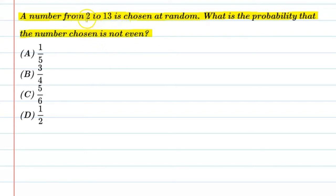What does this question mean? It means you have some numbers from 2 to 13. You randomly choose one number. You need to find the probability that it's not an even number, meaning the number you choose should not be even. Let's start. First we'll write down what is given.